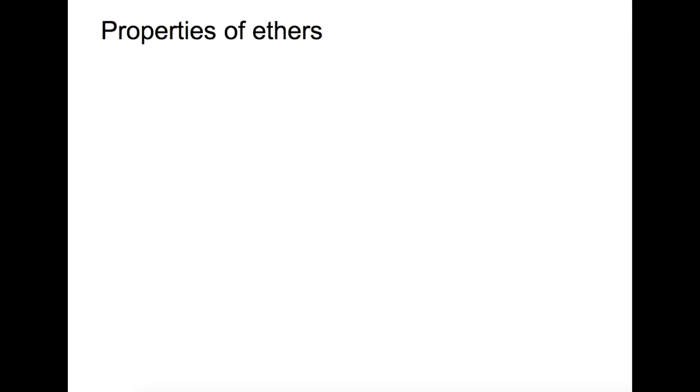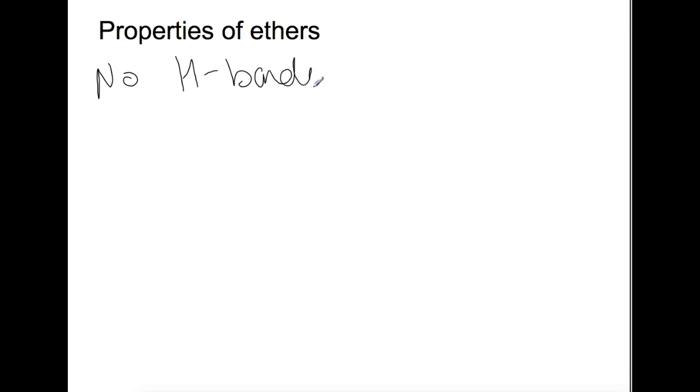So how do ethers differ from their isomeric family, the alcohols? The first and main difference is that there is no hydrogen bonding between ether molecules. This means that their boiling points are much lower.